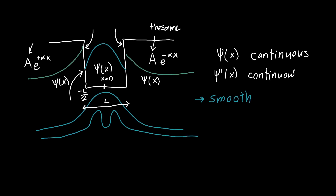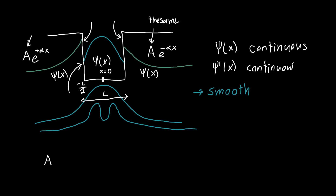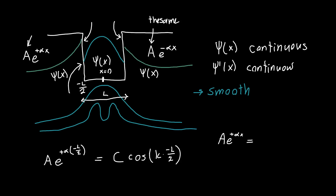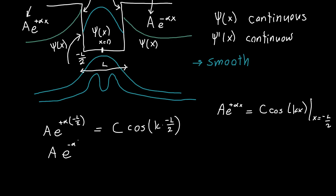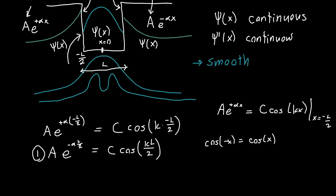Let's set the wave function and its derivative equal at the boundary — continuity requires that a·e^(+α(−L/2)) = c·cos(k(−L/2)). Simplifying, a·e^(−αL/2) = c·cos(kL/2), where I've used the property that cosine of (−x) equals cosine of x to eliminate the minus sign. This is our first boundary condition equation.